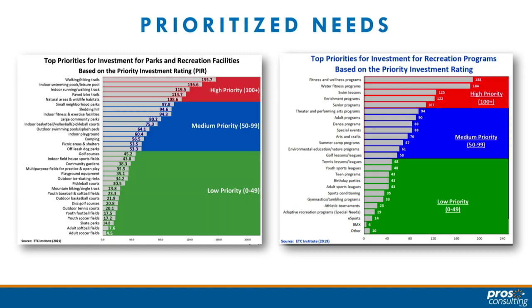There are going to be things that fall into the low priority that you might be surprised to see there. One of the things we look at when we think about low priority is simply that it's either a very age-specific activity — sports, kids' sports, youth soccer — or it's a very special interest.